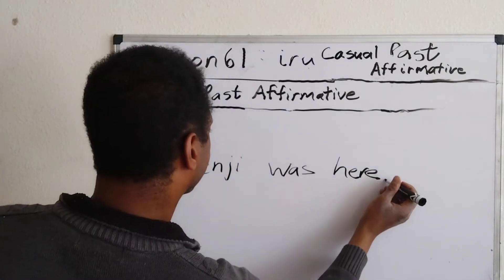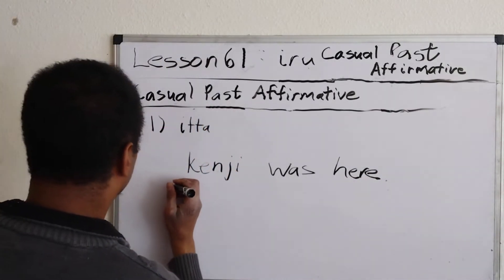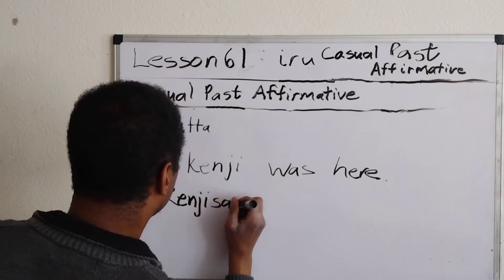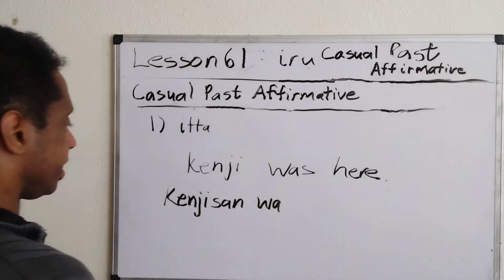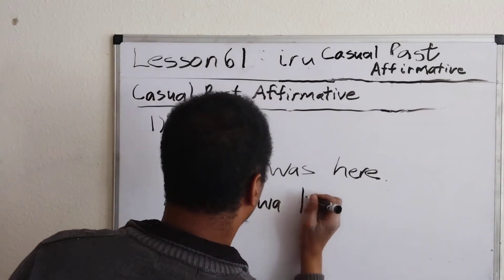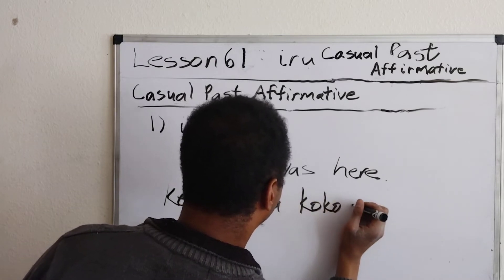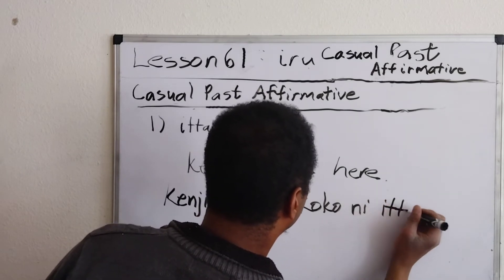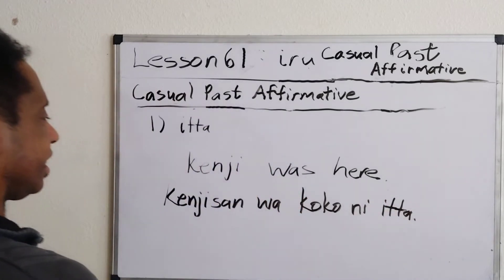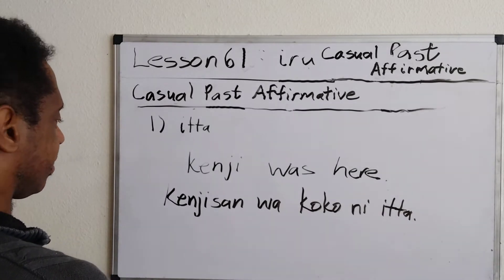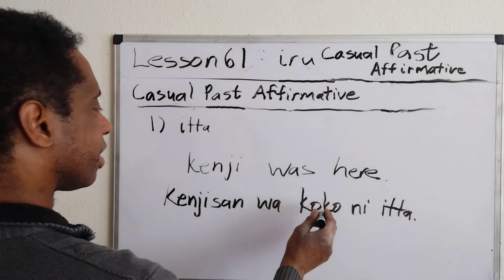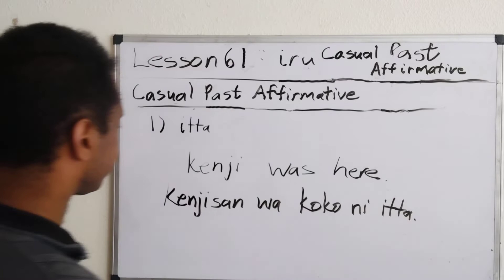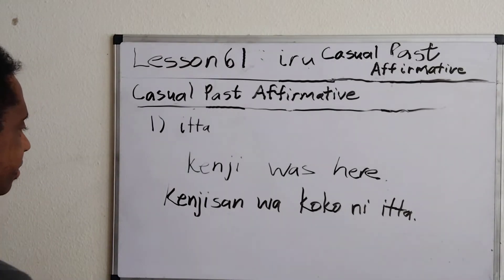Kinji was here. To translate that we could write: Kinji-san wa koko ni ita. That breaks down as: Kinji — here — at location — was (existed). Let's go over some sample problems.